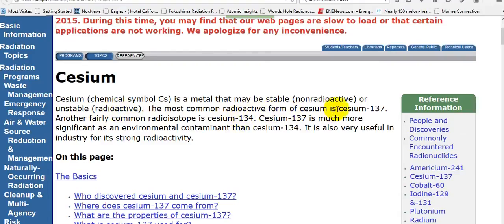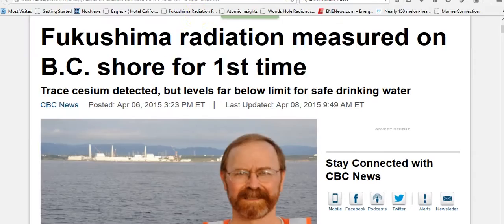The most common radioactive form of cesium is cesium-137. Cesium is not radioactive, but cesium-137 that went through a chain reaction is. Trace cesium detected but levels far below the limits for safe drinking water. Let's go look at safe drinking water for Canada.